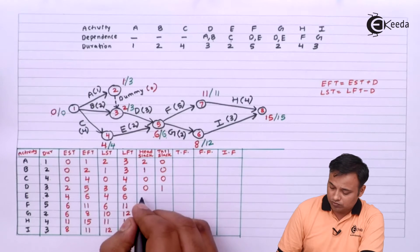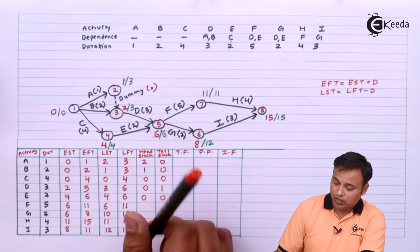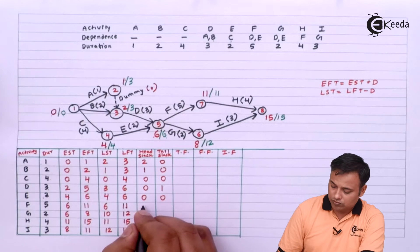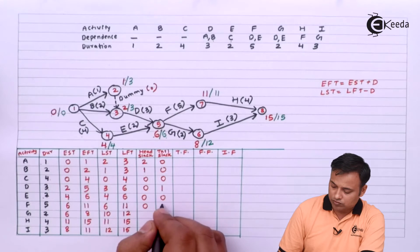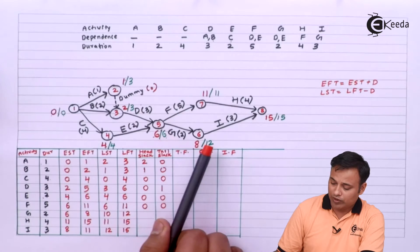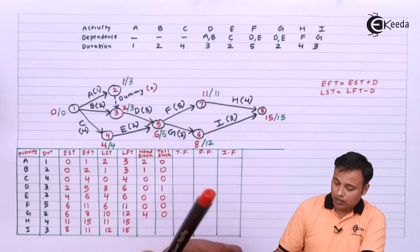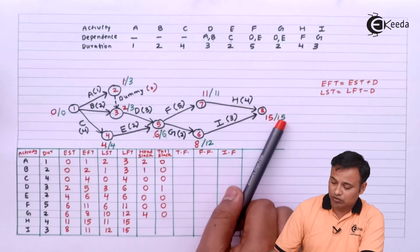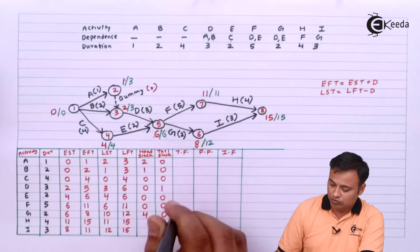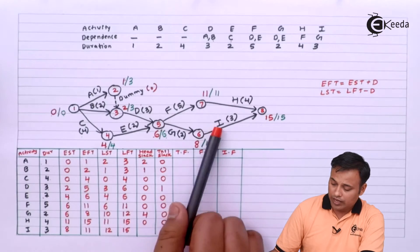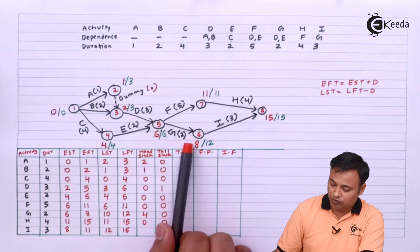Now we calculate the head and tail slack for each activity. For activity F: head slack = 0, tail slack = 0. For activity G: head slack = 12 minus 8 = 4, tail slack = 6 minus 6 = 0. For activity H: head slack = 0, tail slack = 0. For activity I: head slack = 0, tail slack = 4.